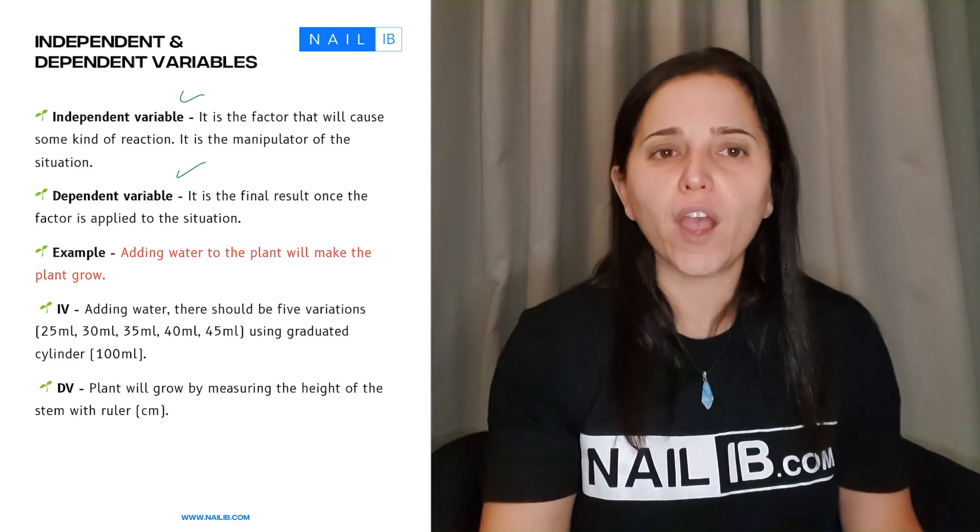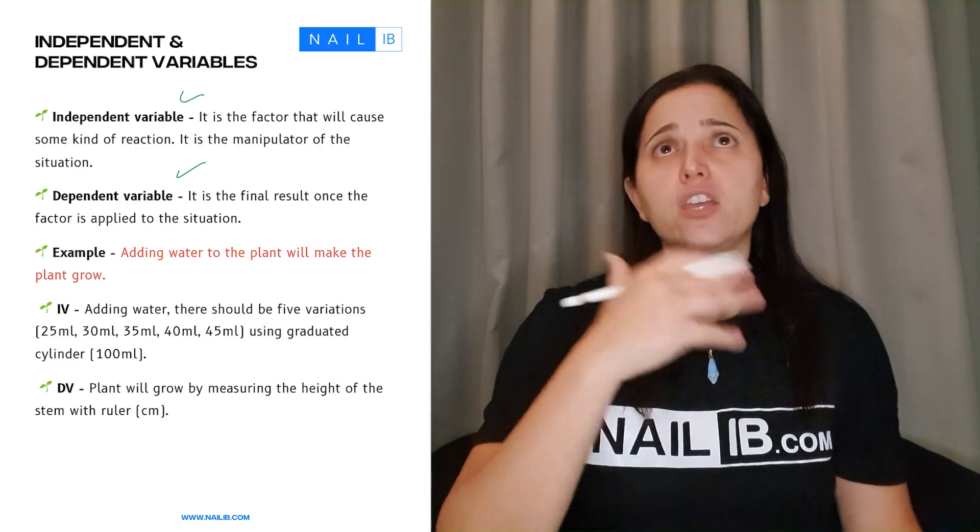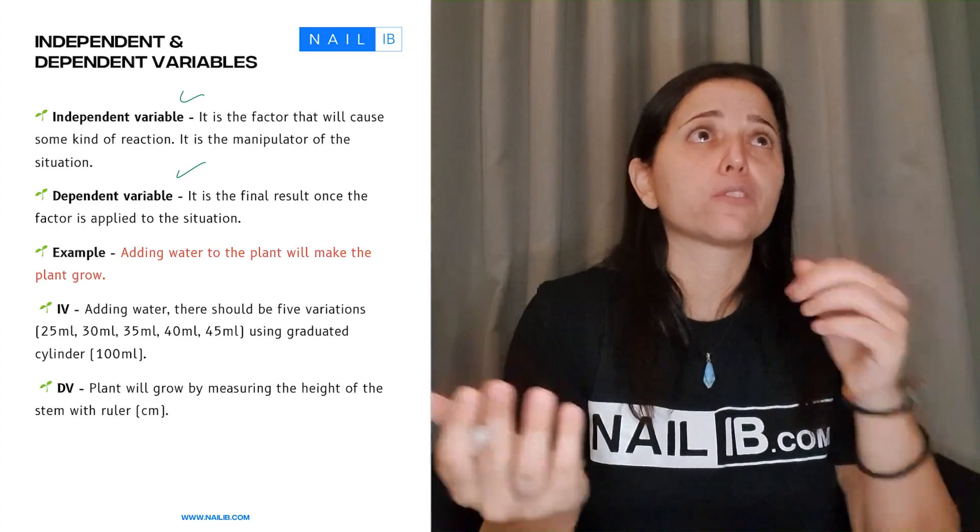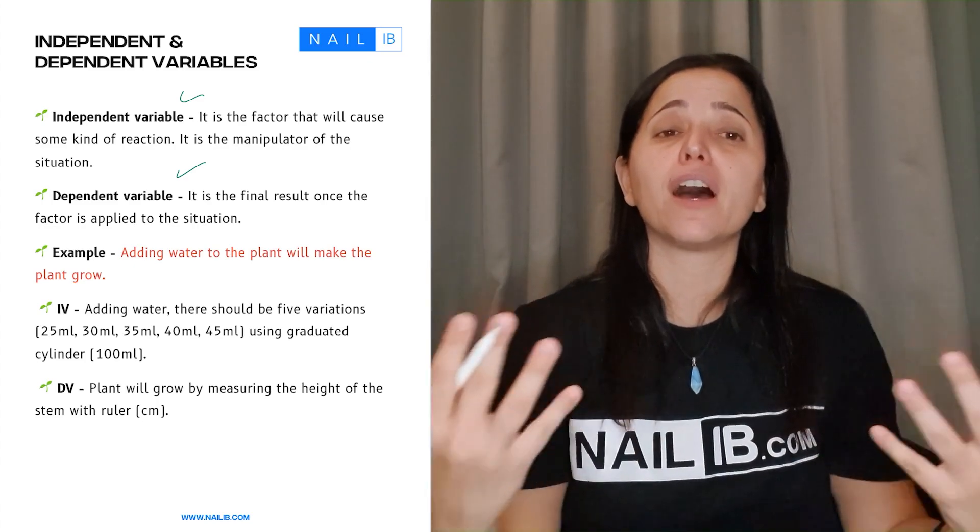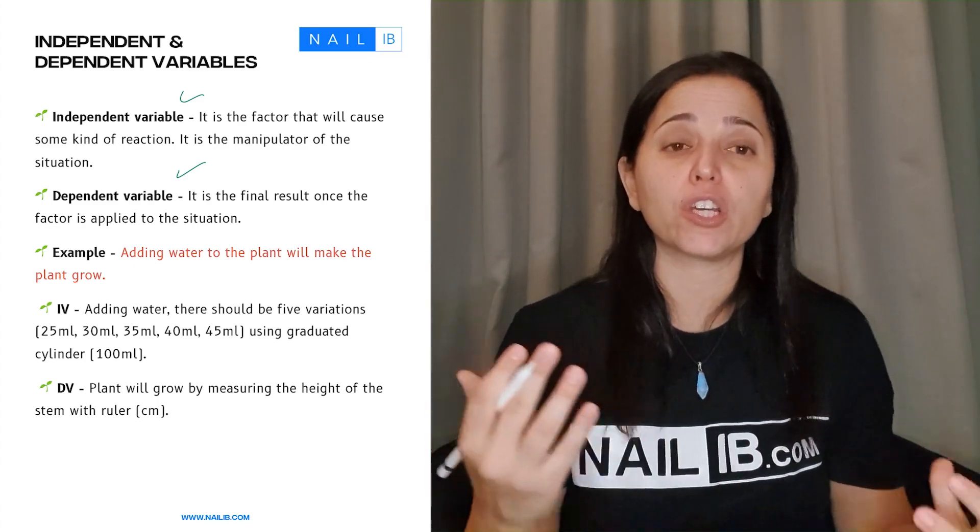Response could be change of weight. It could be change of height. It could be change of colors. These are different types of dependent response depending on what you're going to use.